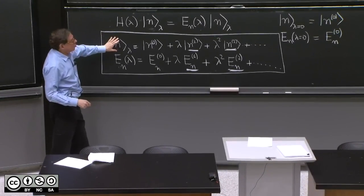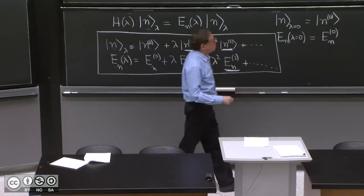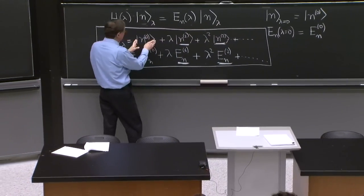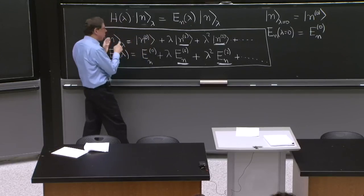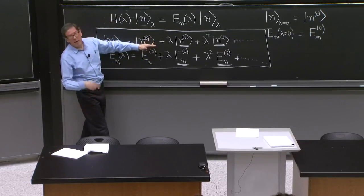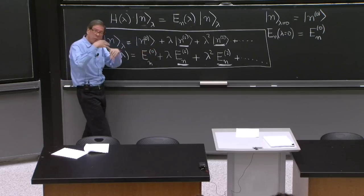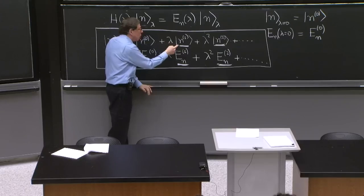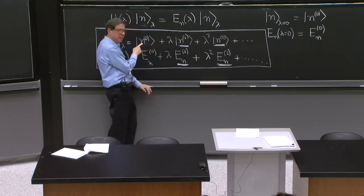So here it is. Suppose you have a series expansion in lambda. This is the state. When lambda is equal to 0, this should be the state. But when lambda is different from 0, that will not be the state. We'll have lambda correction. So this is the first order correction to the state.